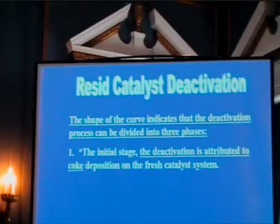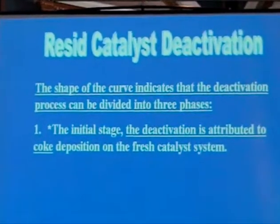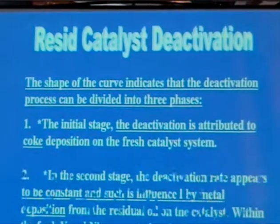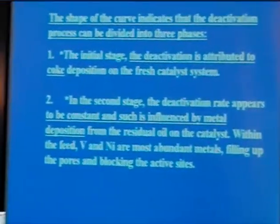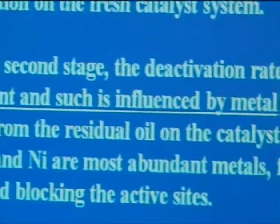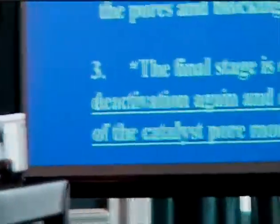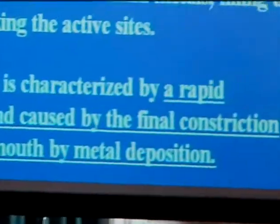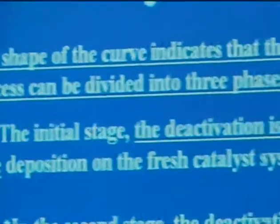As indicated, the three stages are: the first attributed to coke deposition, the second due to vanadium and metal which starts filling the pores and blocking the active sites, and then the final stage with rapid deactivation where the catalyst is no longer active. The catalyst has to be discharged and a new catalyst loaded — this is general practice in the refinery.